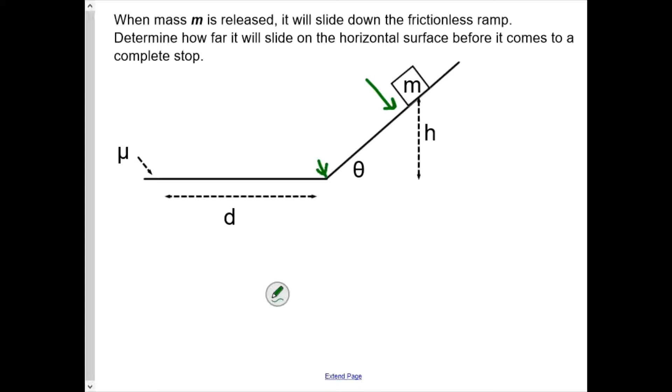When it gets down to this point here, it reaches a horizontal surface which has a coefficient of friction. I'm just going to leave it as μ, not call it μ_k, but it would be μ_k. And the question is, how far along the horizontal surface will it slide before it comes to a complete stop?